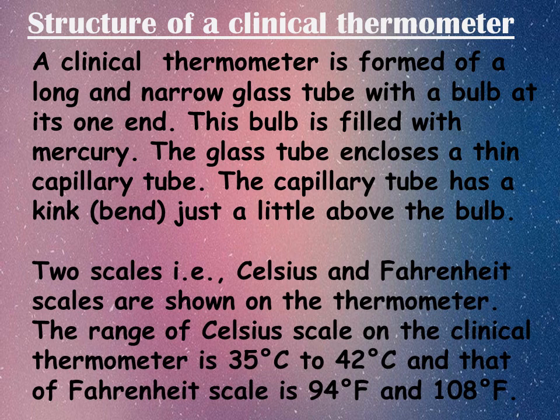Two scales, that is Celsius and Fahrenheit scales, are shown on the thermometer. The range of the Celsius scale on the clinical thermometer is 35°C to 42°C, whereas the range of the Fahrenheit scale on the clinical thermometer is 94°F to 108°F.